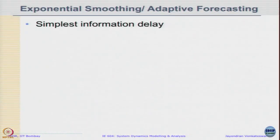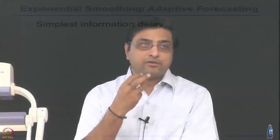The simplest form of information delay is called exponential smoothing or first order exponential smoothing for adaptive forecasting or first order adaptive forecasting. Those of you who have done a course on basic operations management must have come across this forecasting method called exponential smoothing. This is nothing but updating the information about the forecast based on the present value of the actual sales or demand. That structure is called a first order exponential smoothing and that is one of the first basic models of information delay.